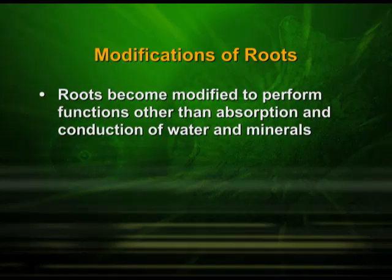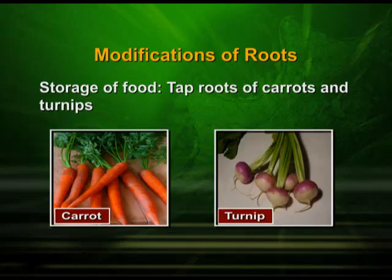Roots become modified to perform functions other than absorption and conduction of water and minerals. In case of tap roots of carrots and turnip, they store food inside — these are storage roots. The next is the supporting type of root, found in the stems of maize and sugarcane. There is another type of root known as the respiratory root, found in case of Rhizophora. These roots develop from below the soil vertically upwards and are meant for respiration. They are also referred to as pneumatophores.